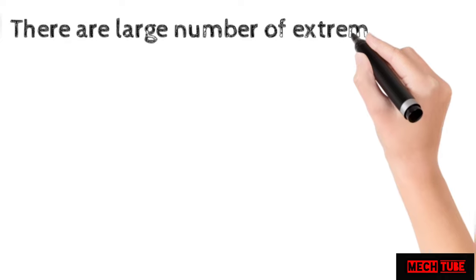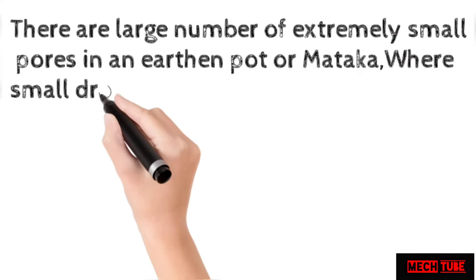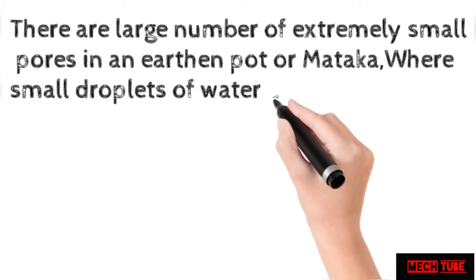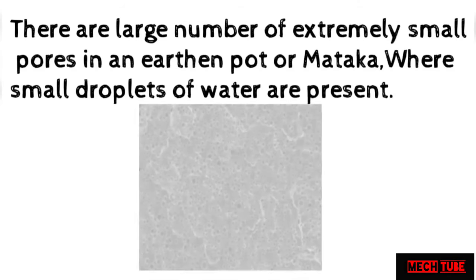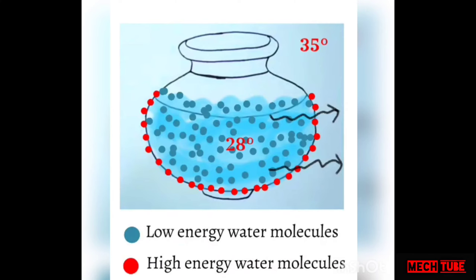There are a large number of extremely small pores in an earthen pot or matka, where small droplets of water are present. When we keep water inside the matka, some water molecules continuously keep seeping through these pores to the outside of the pot. That means some water droplets are present at the outside surface of the matka, that is, the earthen pot.